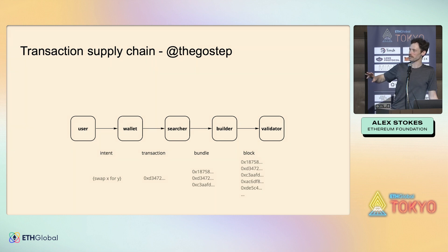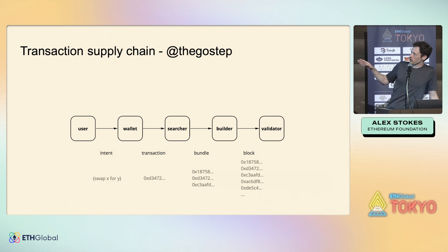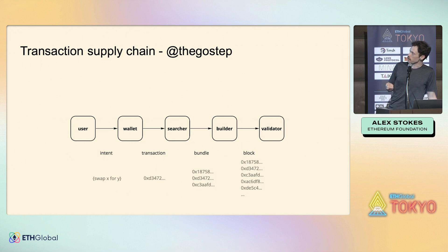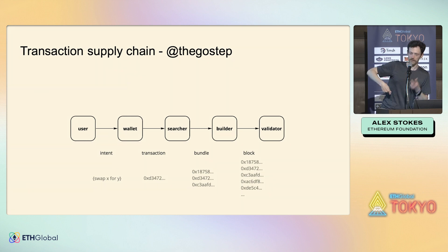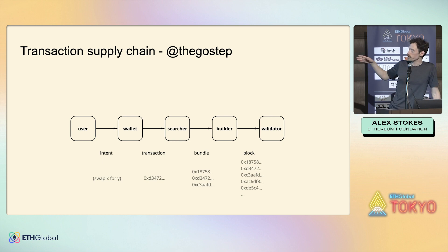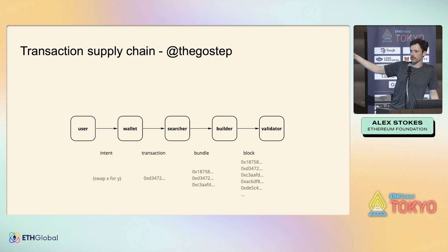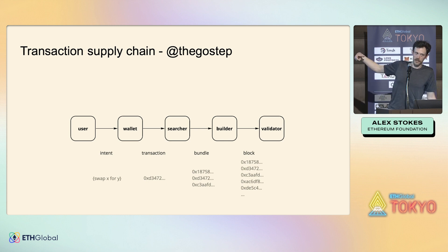Searchers are the ones collecting or extracting this MEV. The way they do this is through bundles — a stack of transactions. In our sandwich example, you would have the front-run, the victim's trade, and the back-run — that's the bundle. That bundle then goes to a builder. Builders are kind of like searchers but specialize in making complete blocks rather than one or two specific MEV strategies. Builders build blocks which they then need to hand off to validators.